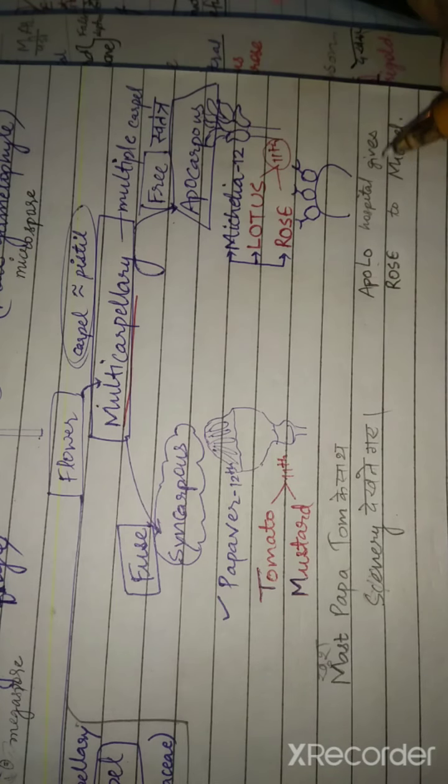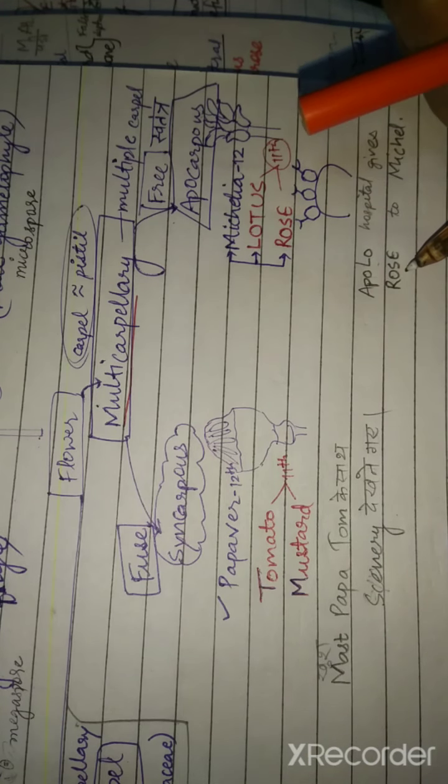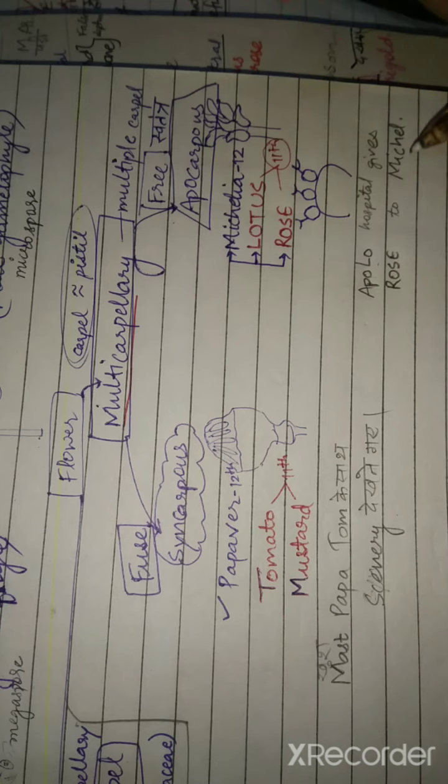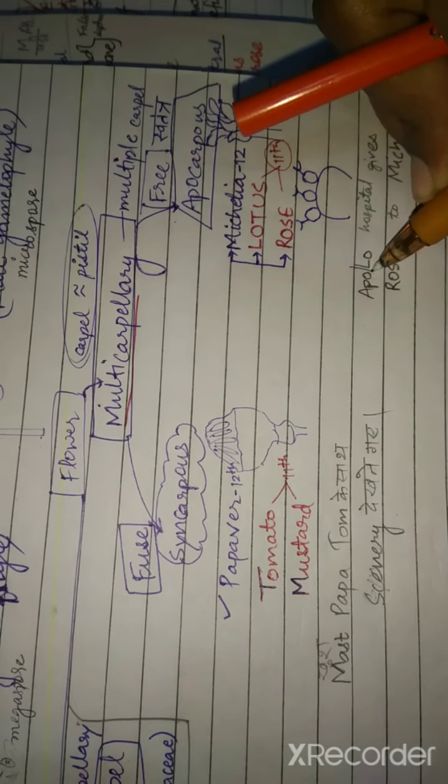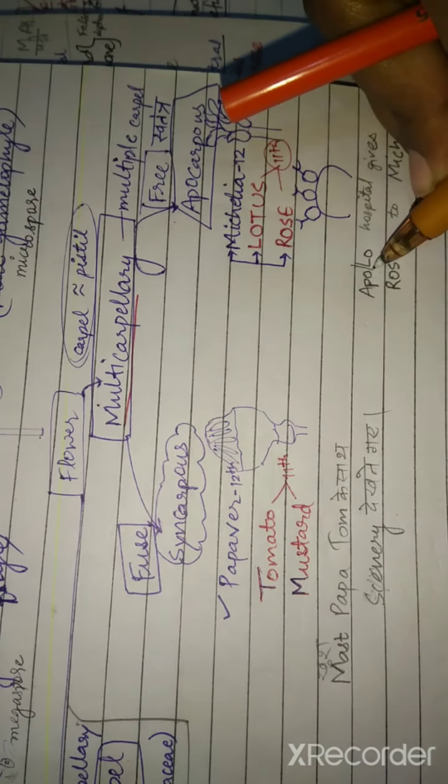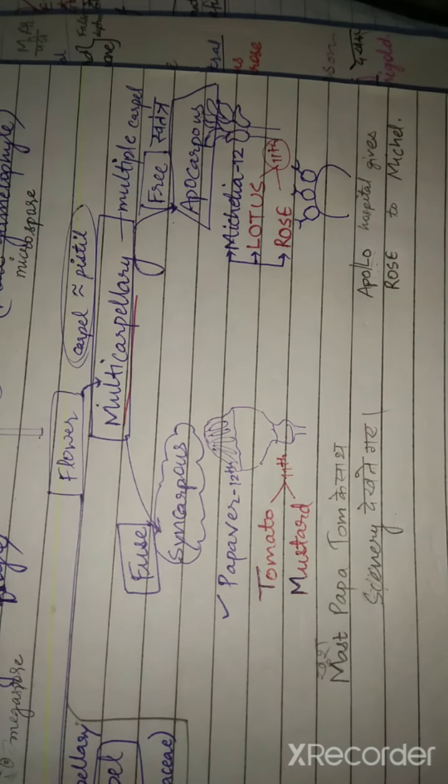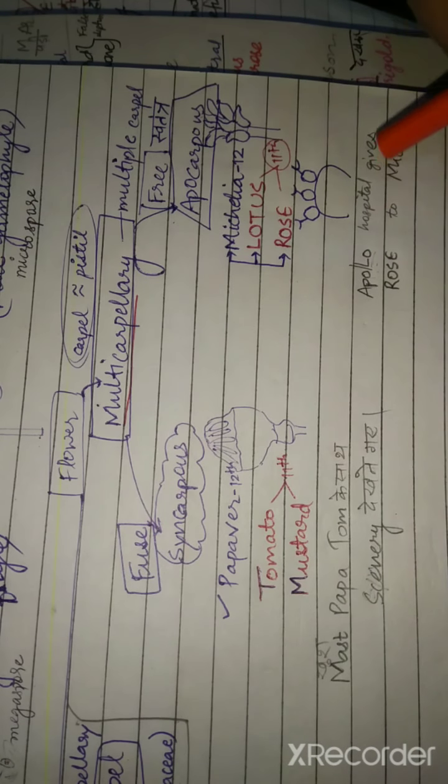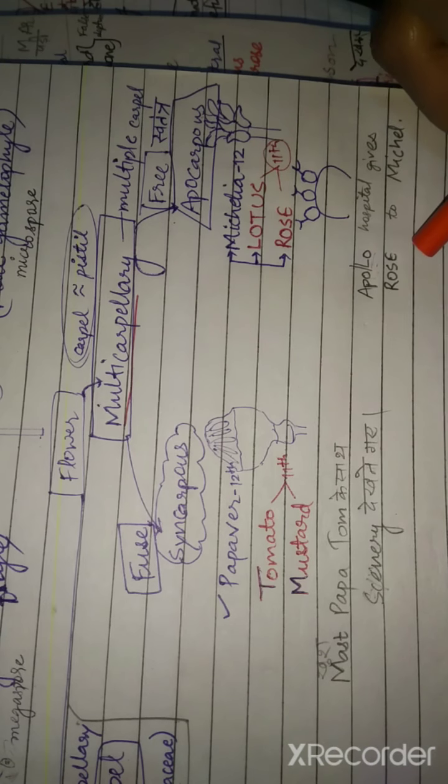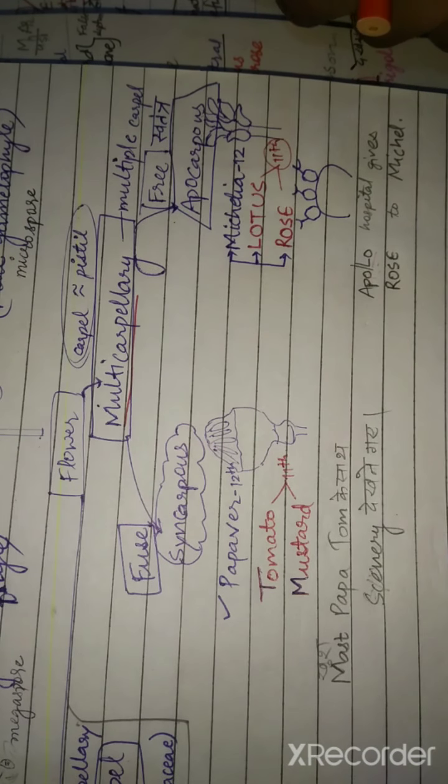Apollo Hospital gives rose to Michael. Apollo means apocarpus condition. Rose - you can give rose to lotus. Lotus and rose are examples of apocarpus condition.